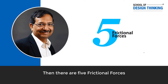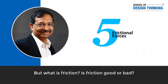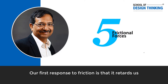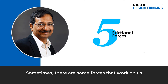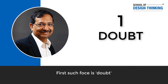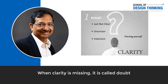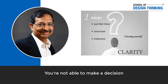But there are five frictional forces too. What is friction — is it good or bad? Braking is where friction is good; where it retards motion, it's bad. It's contextual in nature. Our mind says friction is bad — the first response is that it retards us. The first such frictional force is doubt. Confusion is the outcome of doubt. Clarity is missing — it's about uncertainty, being indecisive, not able to make a decision, and sometimes looking for approval.